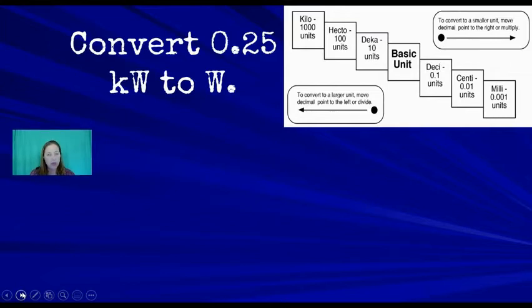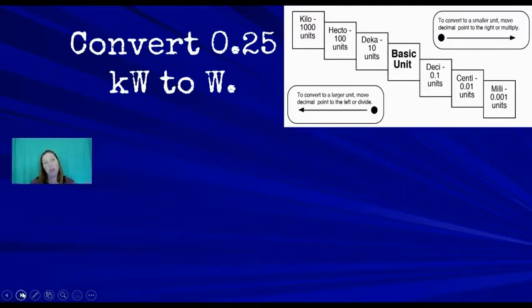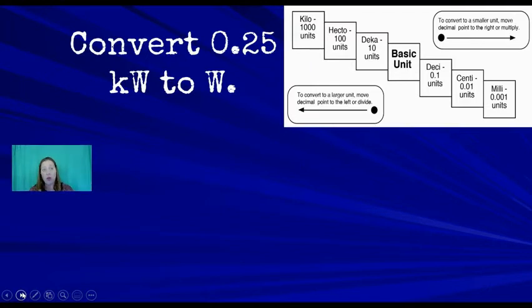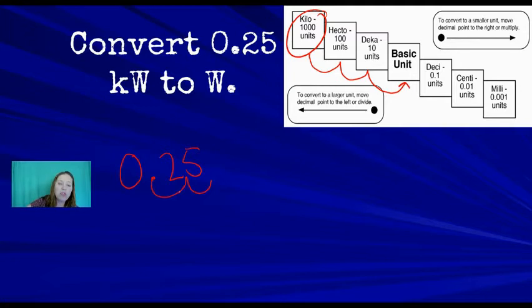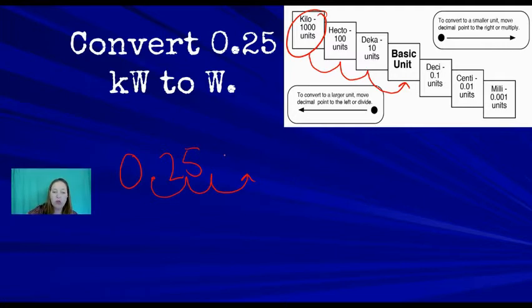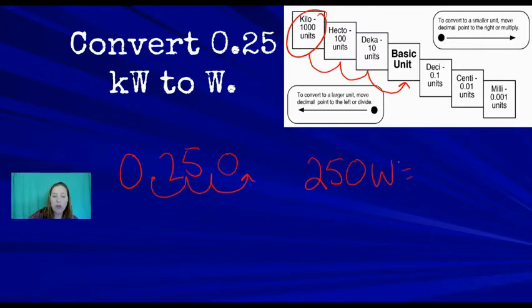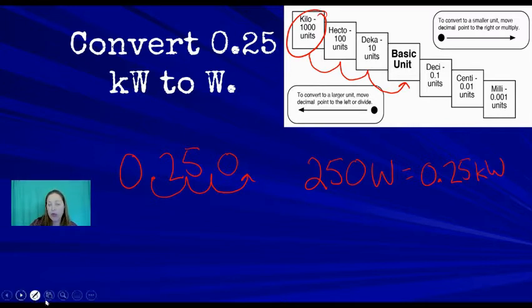Next practice problem: convert 0.25 kilowatts to watts. Watts is how electricity usage is measured — also the rating on light bulbs. Going from kilowatts to the base unit (watts) is three places to the right, so move the decimal three places: 0.25 kilowatts equals 250 watts.